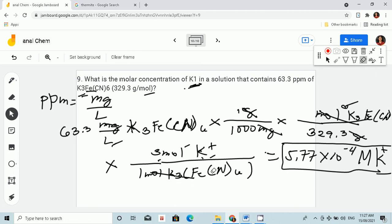So that's it. We have 5.77 times 10 to the negative 4. Three significant figures. Let's go. Thank you.